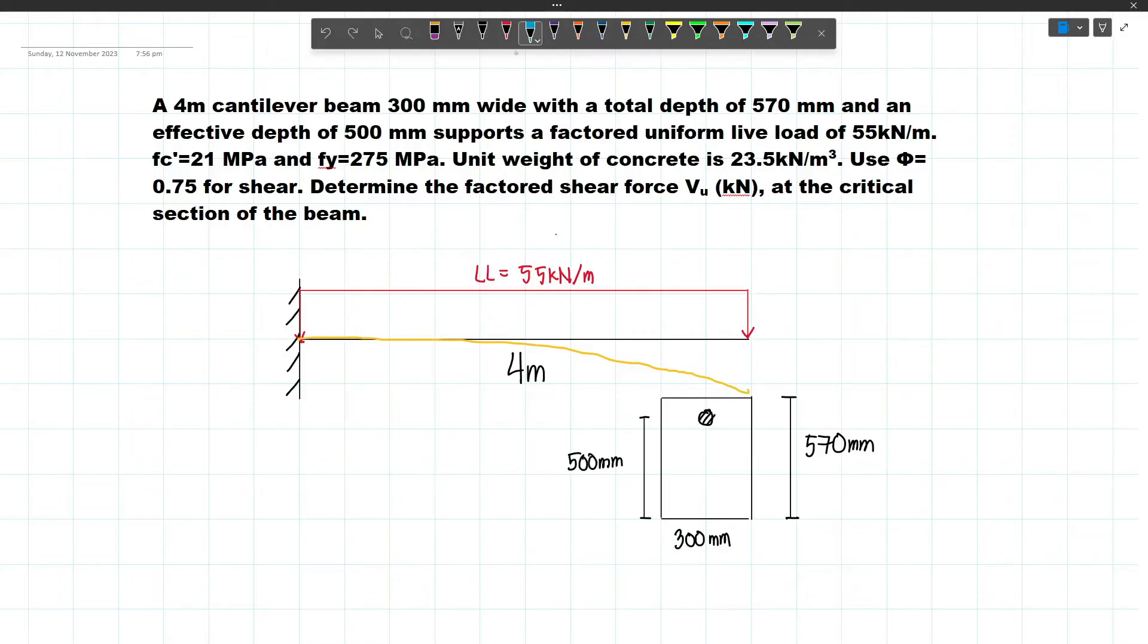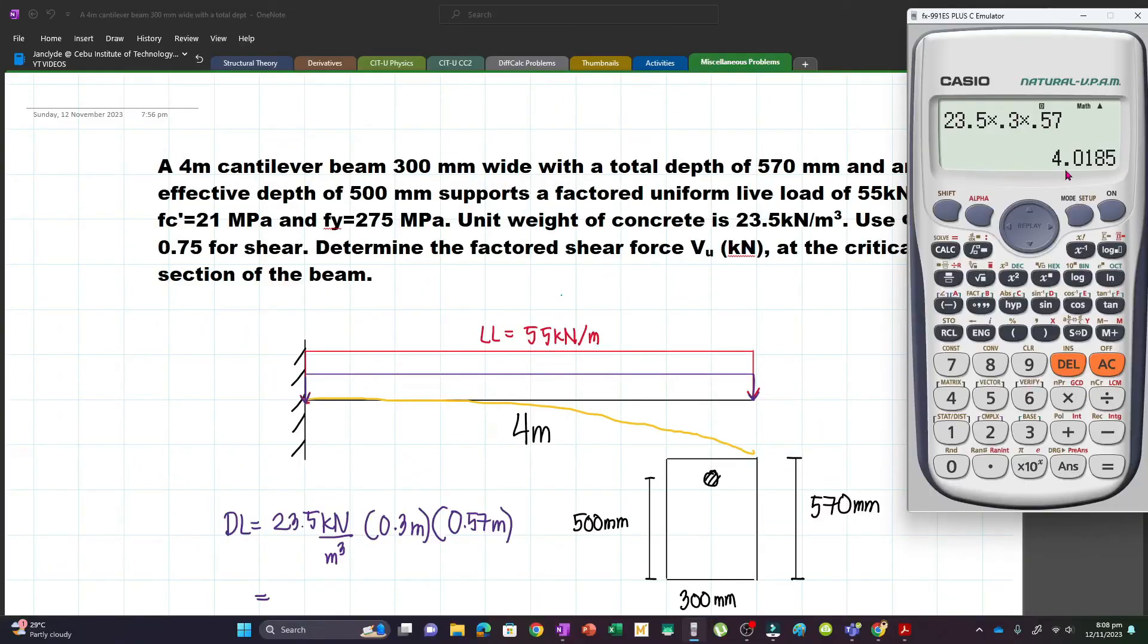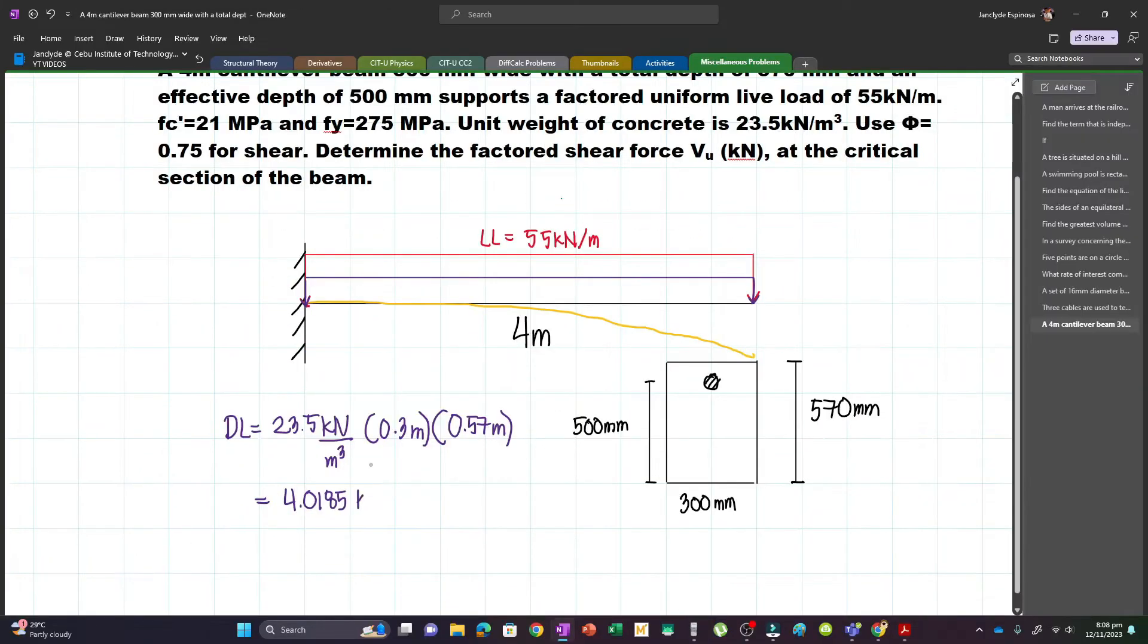Let's compute for the dead load. The dead load equals the unit weight of concrete multiplied by the cross-sectional area. That will be 23.5 kN/m³ times 0.3 meters times 0.57 meters.